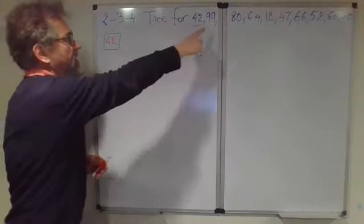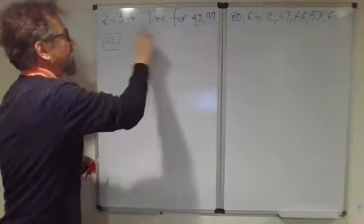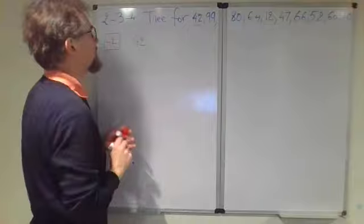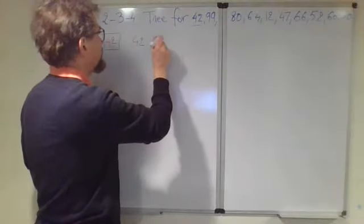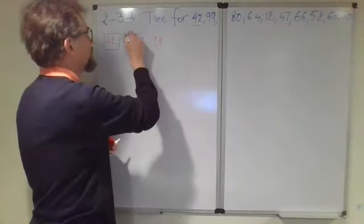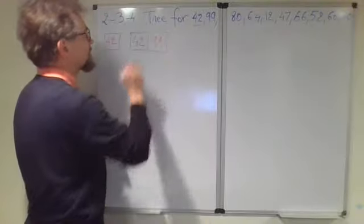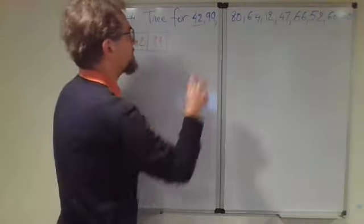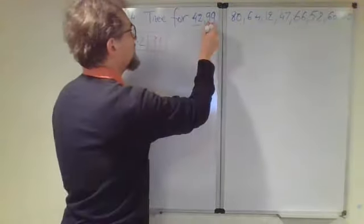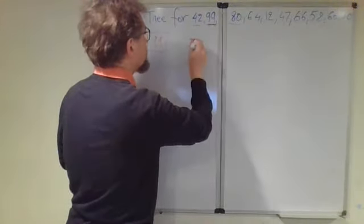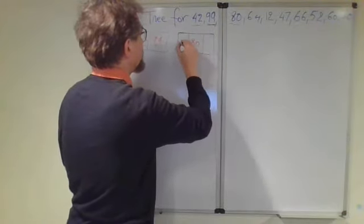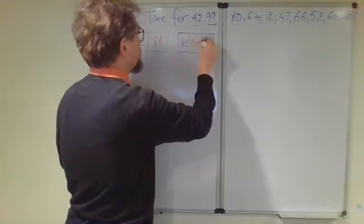If I'm inserting 99, I can insert this simply after the 42, turning the root into a three-node. I can work with a four-node for the next number, so I've processed 99. For the next number 80, I can place it in the middle of a four-node.